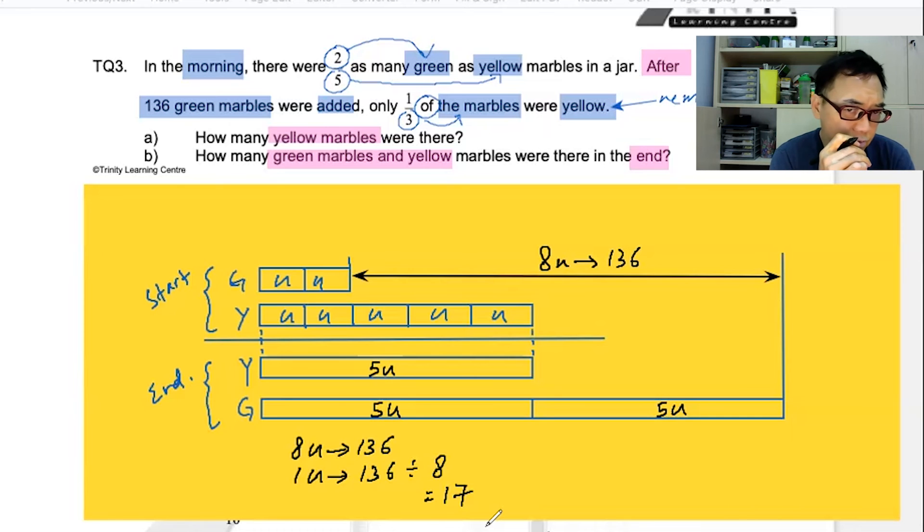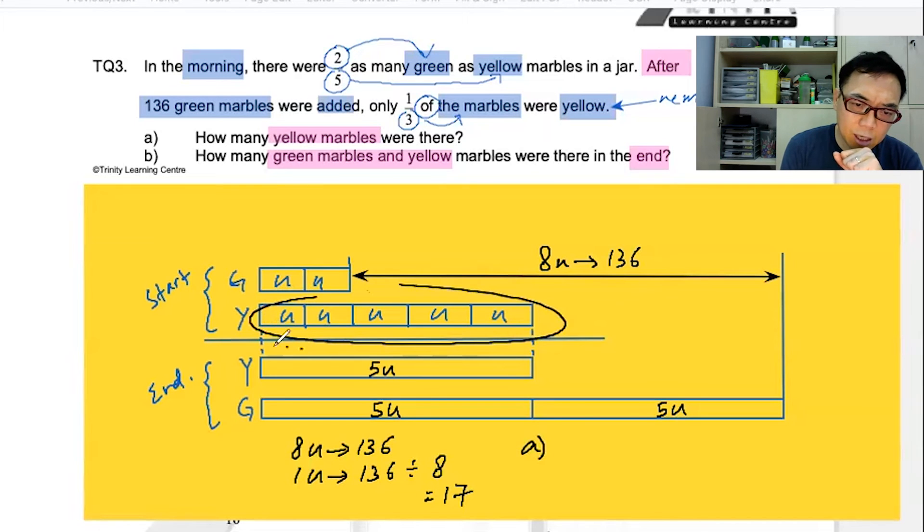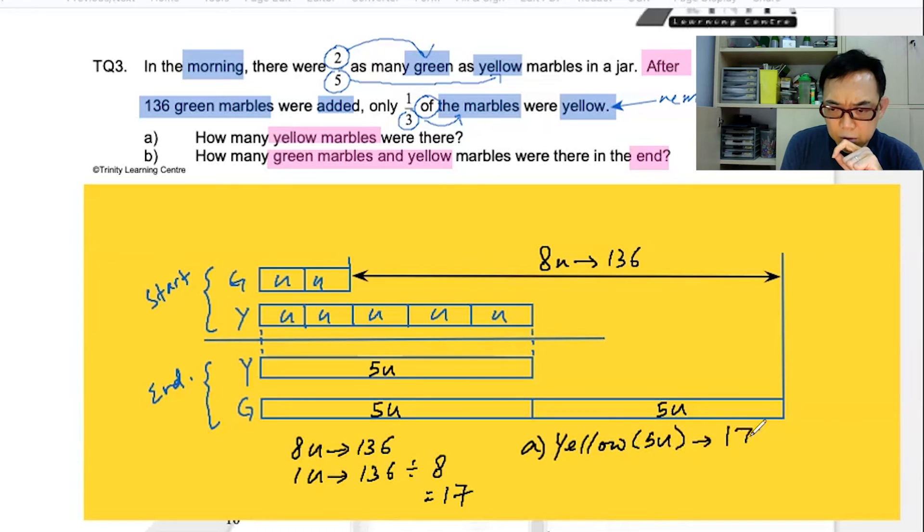There are two questions here. First question is yellow. How many yellow marbles were there? The number of yellow marbles in the beginning and in the end did not change. It is five units. So, to find yellow, you will get 85. And that's your answer for part A.